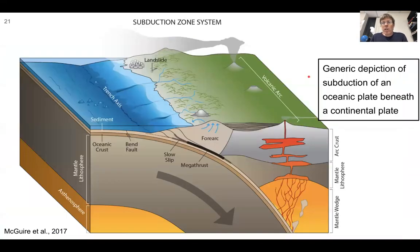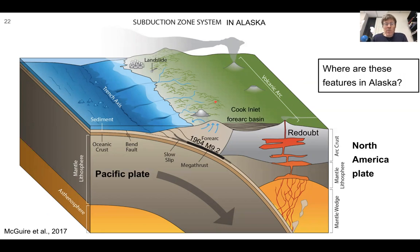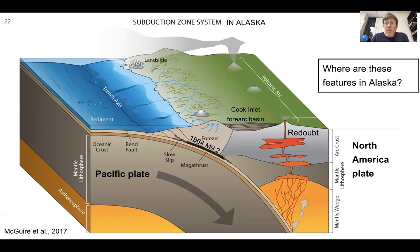Coming back to the generic picture of oceanic plate subduction beneath a continental plate, as we shift toward thinking about Alaska, we can apply names to the components. This is southern Alaska — the Pacific plate going underneath the North America plate. This could be Redoubt volcano, visible from the Kenai Peninsula looking out from Homer. This could be the 1964 magnitude 9.2 Alaska earthquake. This might be the Cook Inlet fore-arc basin, which is the source of oil and gas discovery in Alaska, and also the source of strong shaking during earthquakes.